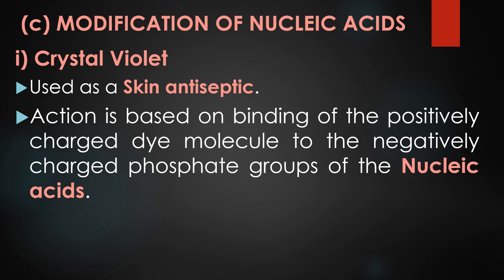The third mode of action is modification of nucleic acids. Two dyes — crystal violet and malachite green — play a major role in this process. Crystal violet is used as a skin antiseptic, and its action is based on binding of the partially charged dye molecules to the negatively charged phosphate groups of the nucleic acids.